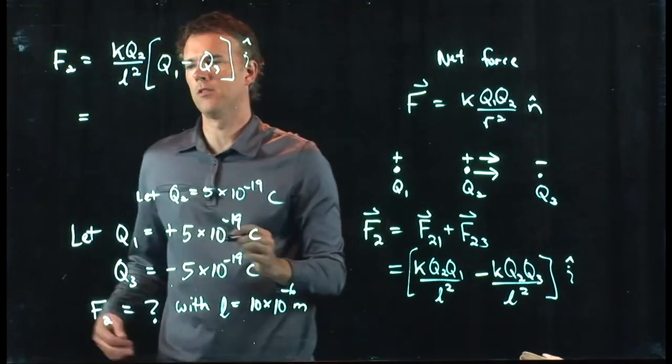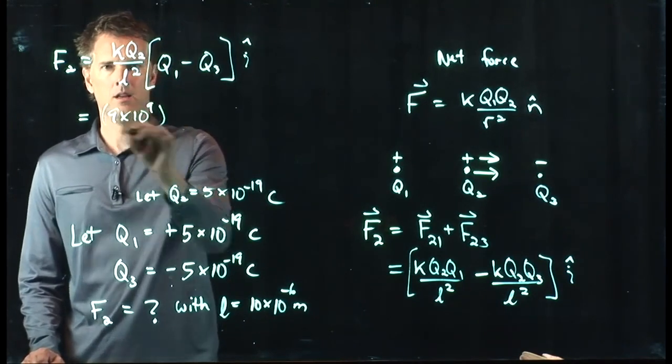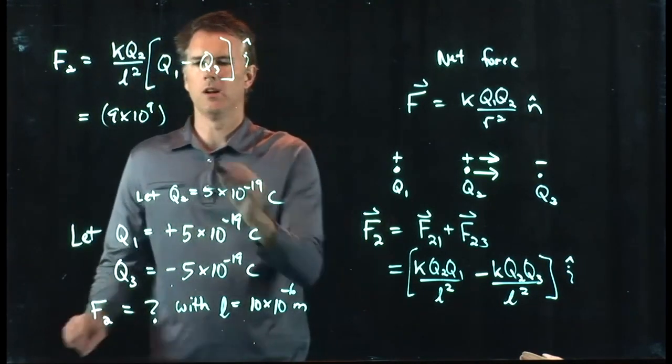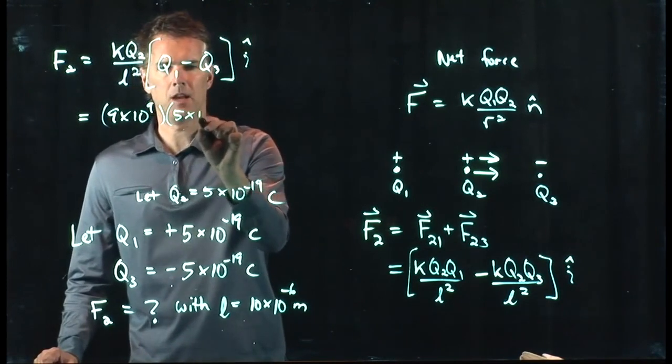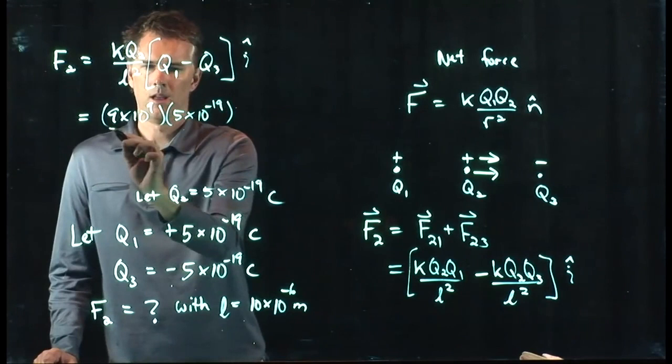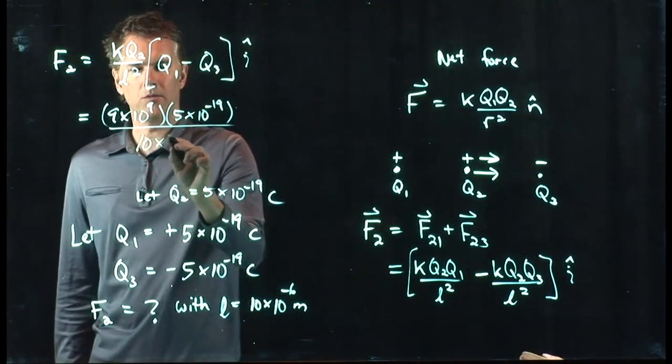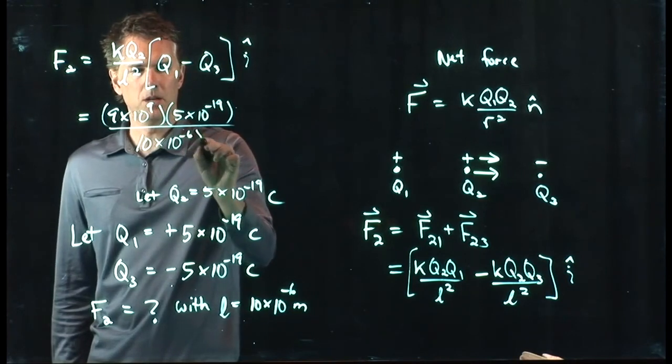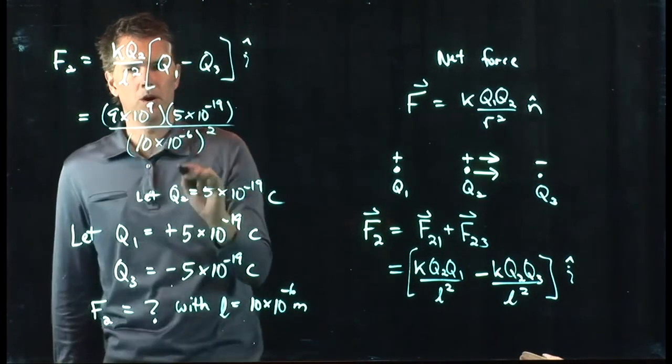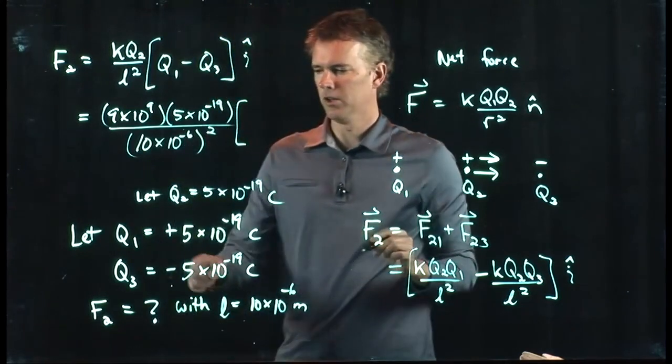And now we can put in all those numbers. k we said was 9 times 10 to the 9, q2 we said was 5 times 10 to the minus 19 coulombs, L we said was 10 microns, 10 times 10 to the minus 6 meters, and we got to square that.